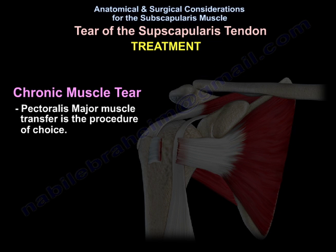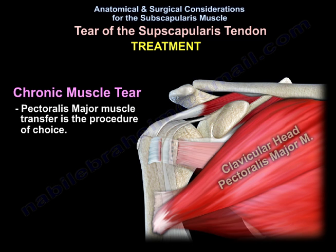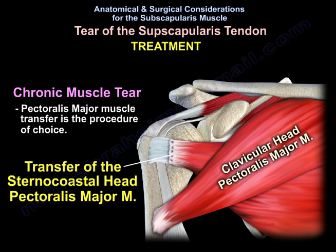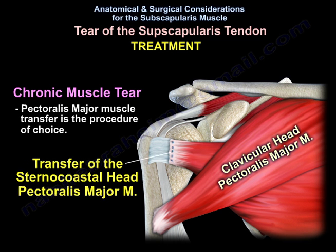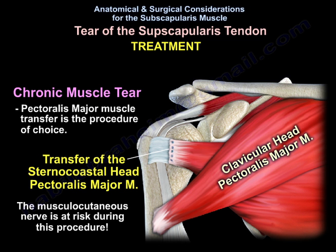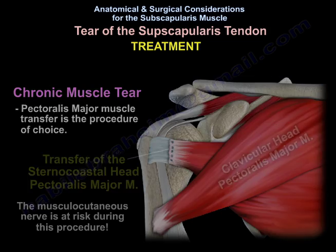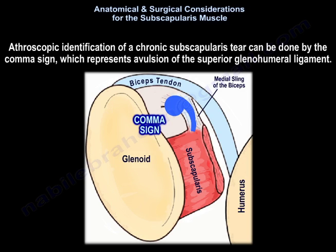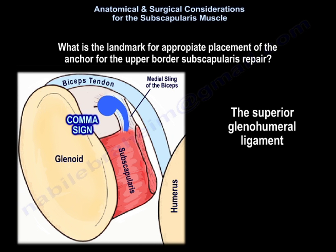For chronic muscle tear, the procedure of choice involves transferring the sternocostal head of the pectoralis major muscle. The musculocutaneous nerve is at risk during this procedure. Arthroscopic identification of a chronic subscapularis tear can be done by the comma sign, representing avulsion of the superior glenohumeral ligament, which also serves as the landmark for appropriate anchor placement for upper border subscapularis repair.